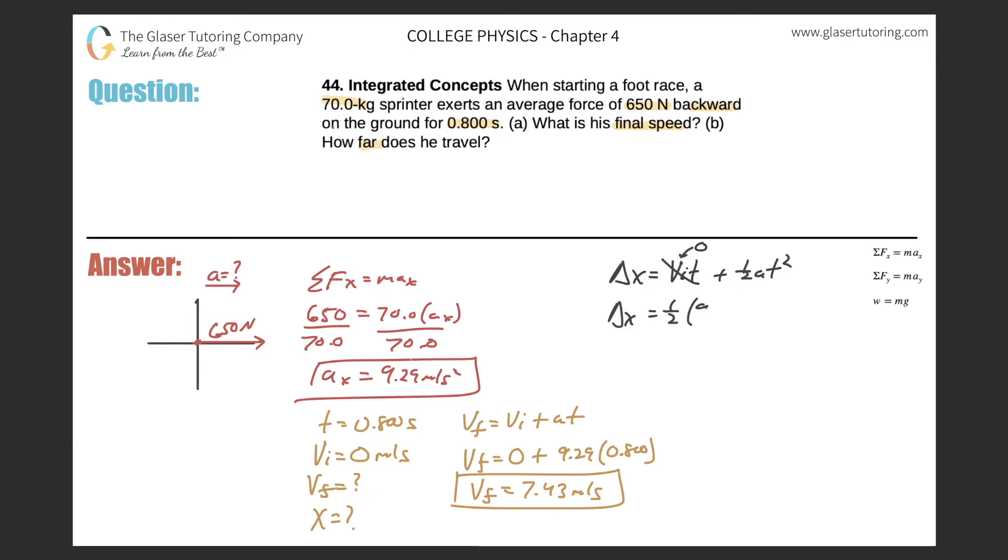So the displacement will be equal to this whole thing goes to zero because the initial velocity is zero. So therefore it's one half of the acceleration of 9.29 meters per second squared multiplied by the time of 0.800 squared. So this is easy. Just plug it into the calculator. So 0.5 times 9.29 times 0.8 squared. And would you look at that? 2.97 and that is meters. And that is how far.